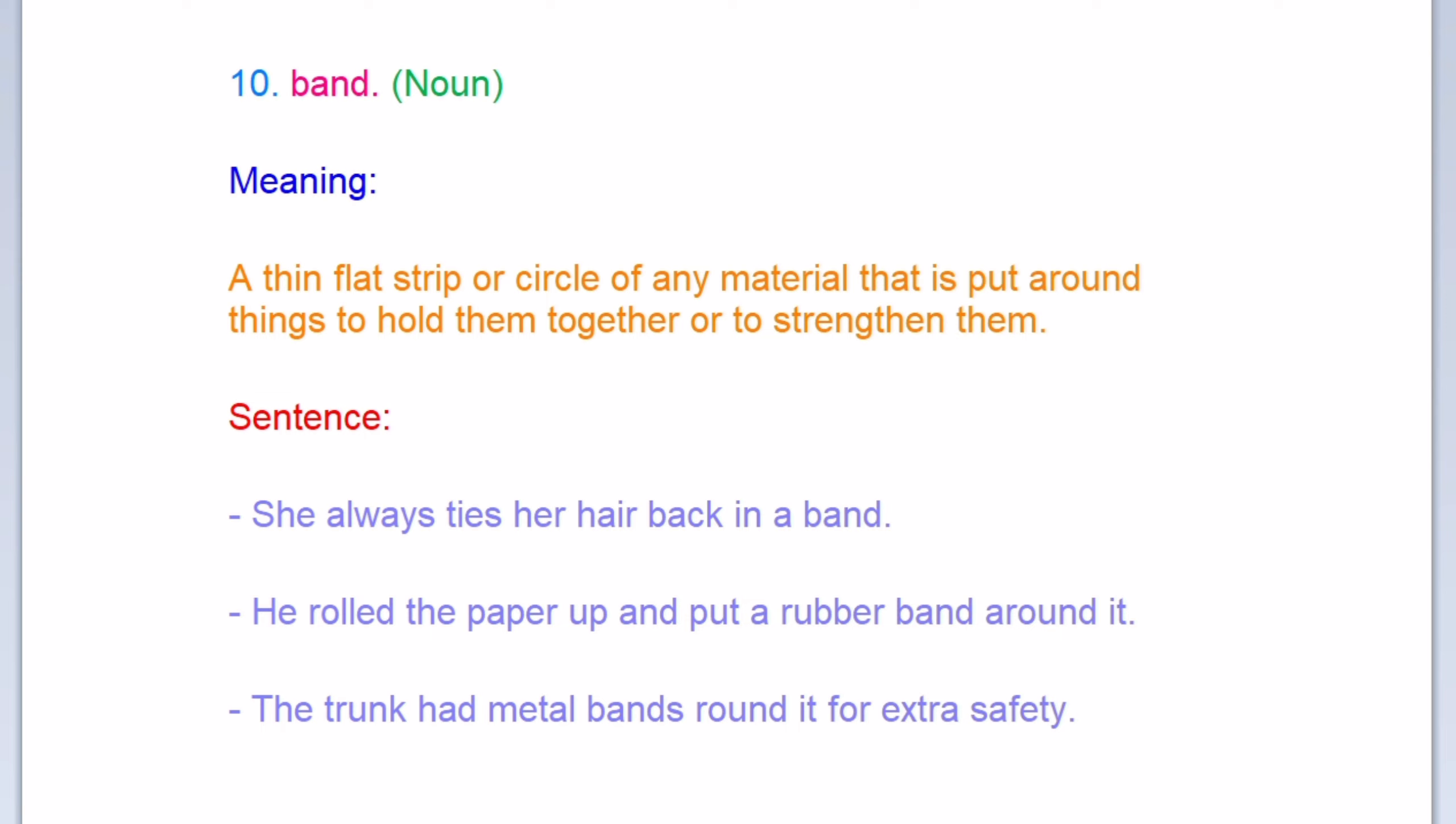The next word is band. Band, it's a noun, means a thin flat strip or circle of any material that is put around things to hold them together or to strengthen them. Sentence: She always ties her hair back in a band.